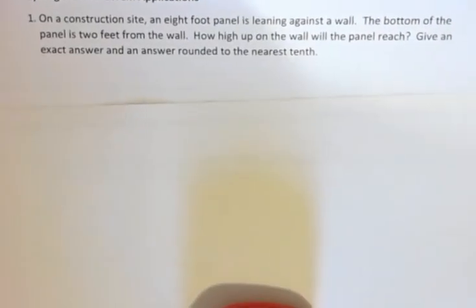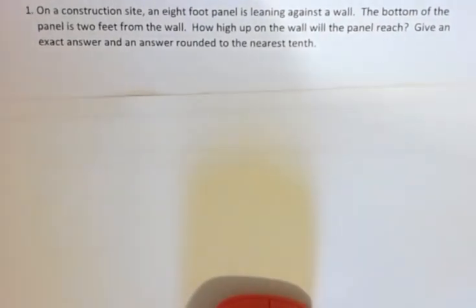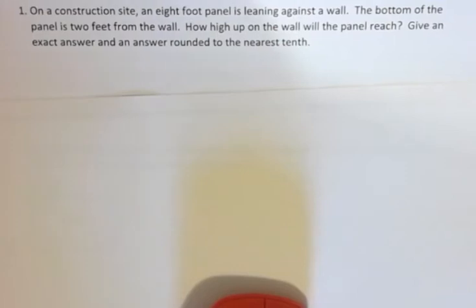First one says on a construction site an eight-foot panel is leaning against a wall. The bottom of the panel is two feet from the wall. How high up on the wall will the panel reach? Give an exact answer and an answer rounded to the nearest tenth.